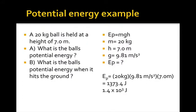So here's an example. A 20 kilogram ball is held at a height of 7 meters. What is the ball's potential energy? So we use our equation, EP equals mgh. M is 20 kilograms. h is 7.0 meters. And g is 9.81 meters per second squared. What is EP? Well, we substitute into our formula, 20, 9.81, and 7. And we obtain the answer of 1,373.4 joules.